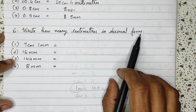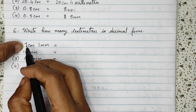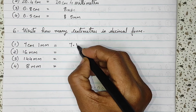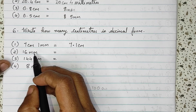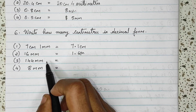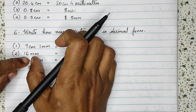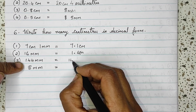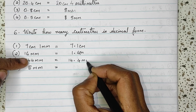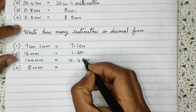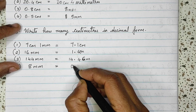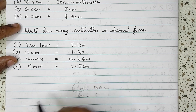Write how many centimeters in decimal form. So, 7 centimeters and 1 millimeter — centimeters become the whole number and 1 millimeter goes after the decimal, so 7.1 centimeters. Then 16 mm means 144 millimeters — wait, the last digit 4 is millimeters, so it becomes 14 centimeters and 4 millimeters, written as 14.4 centimeters. And 8 mm means 0.8 centimeters.